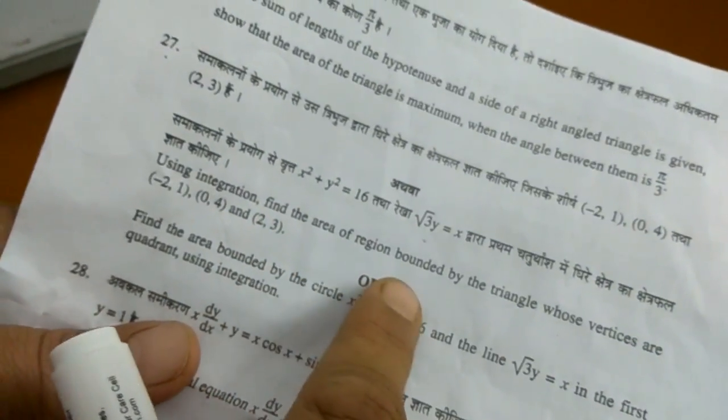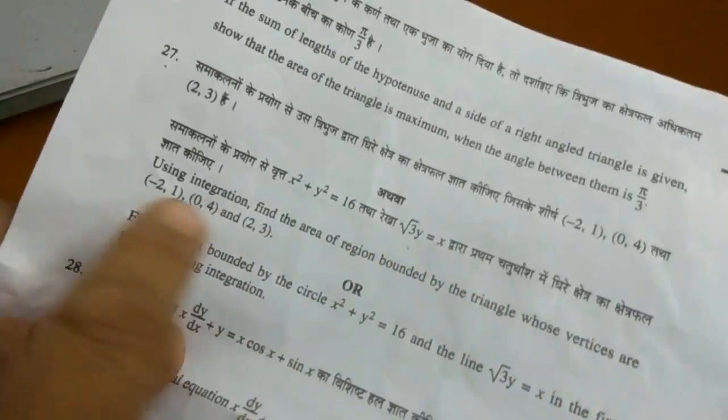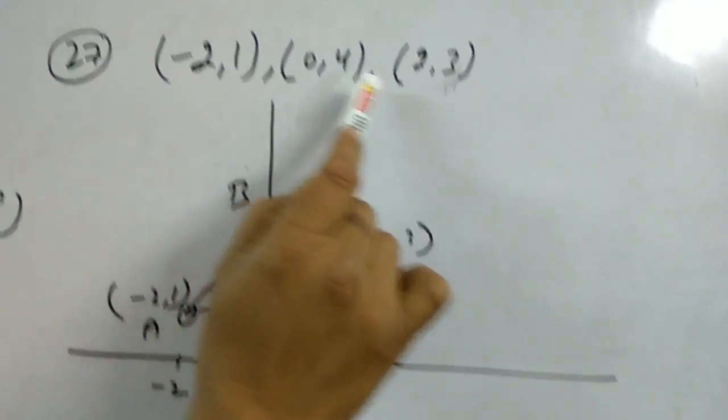Now question number 27. Using integration, find the area of the region bounded by the triangle whose vertices are: minus 1, 0, 0, 4, and 3, 2.